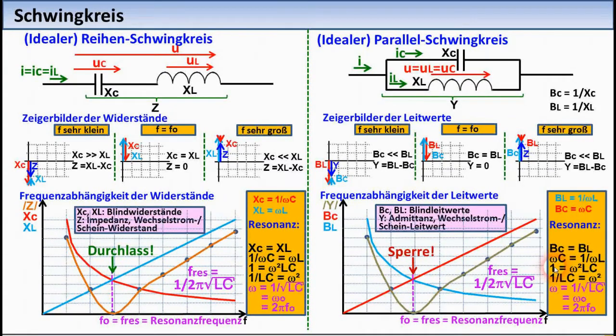At low frequencies, Xc is greater than XL, so that the sum pointer of the total impedance Z points downward. The resonant circuit thus has capacitive behavior.